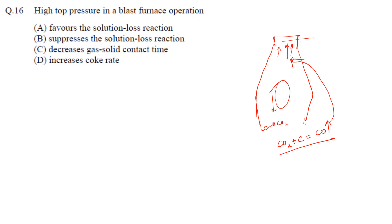If we increase top pressure, the CO percentage and pressure become higher, so by Le Chatelier's principle, the solution loss reaction (CO2 + C → 2CO) moves in the backward direction — meaning it suppresses the solution loss reaction. Option B is correct. Increasing pressure also decreases the coke rate, as carbon consumption decreases. It does not decrease gas-solid contact time.